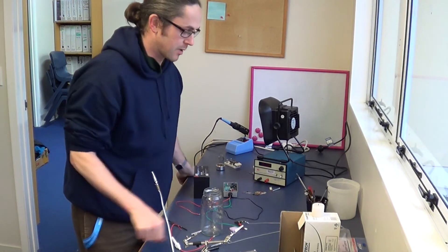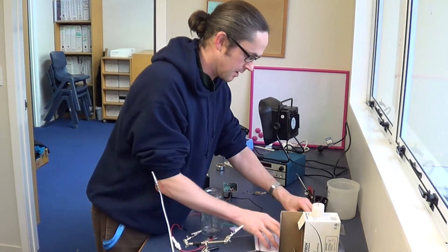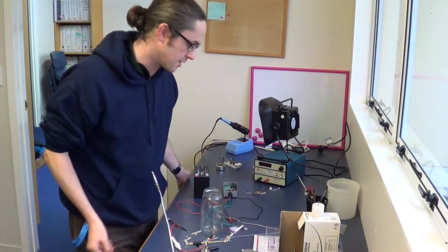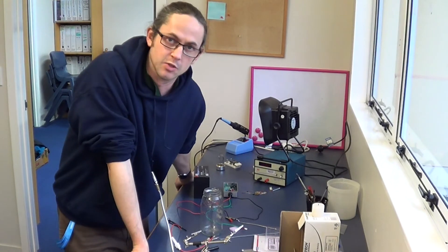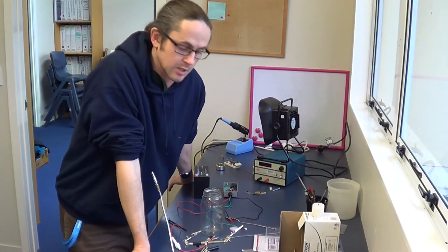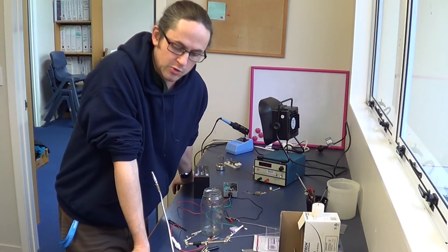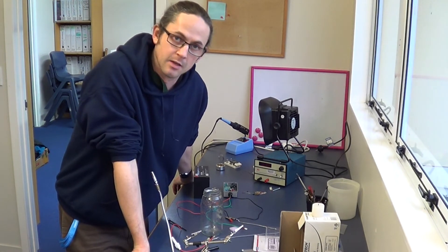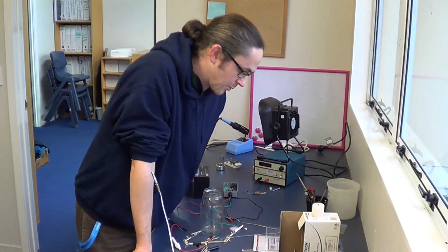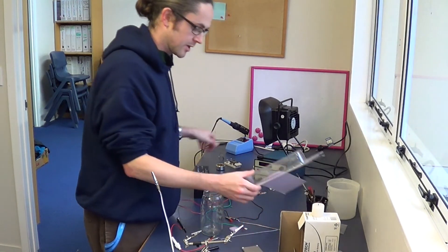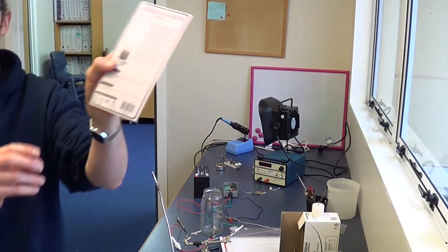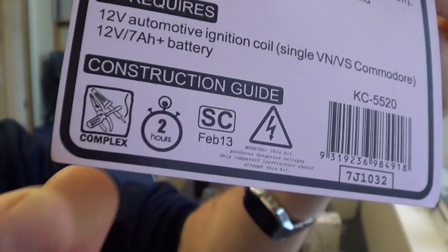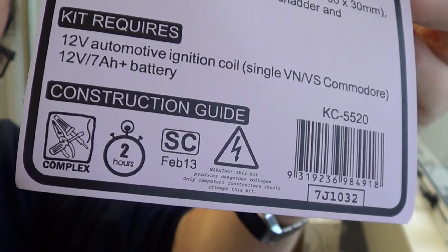So that's the Jacob's Ladder Kit by J-Car. I'll put links down below if you're wanting to buy the kit. These are New Zealand links, of course. There are the J-Car links in Australia. And I'm not sure where else you would buy these things. There'd be overseas ones as well. I'm just reading the time on here. So it says two hours and it did, it took me approximately two hours as well.